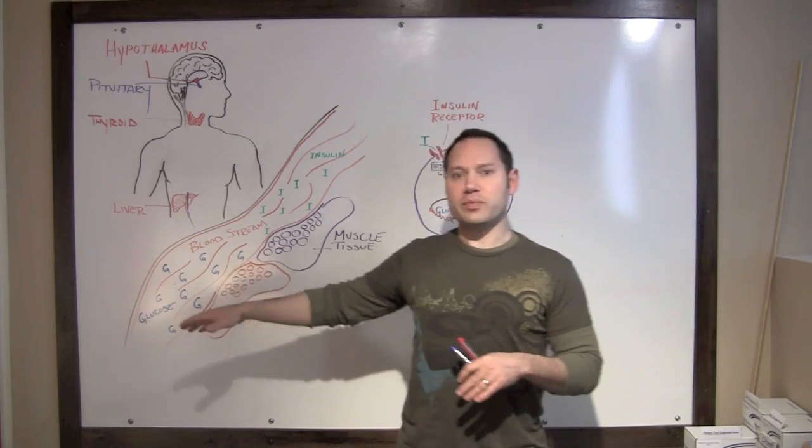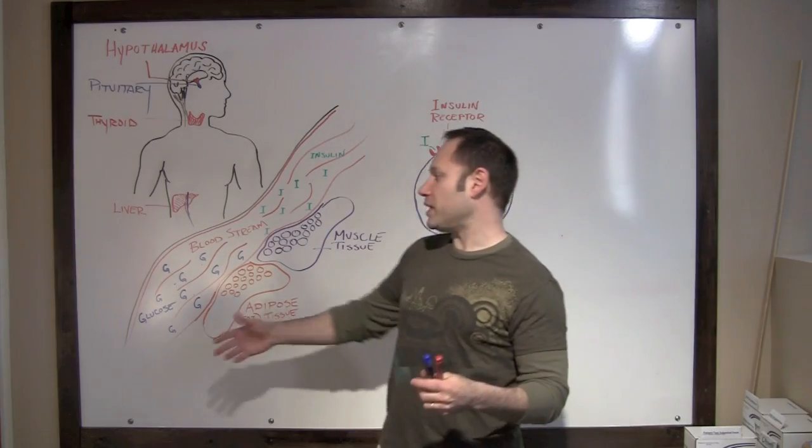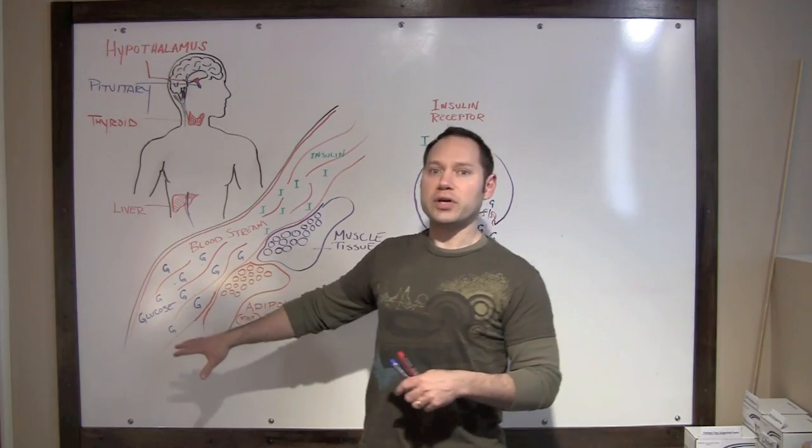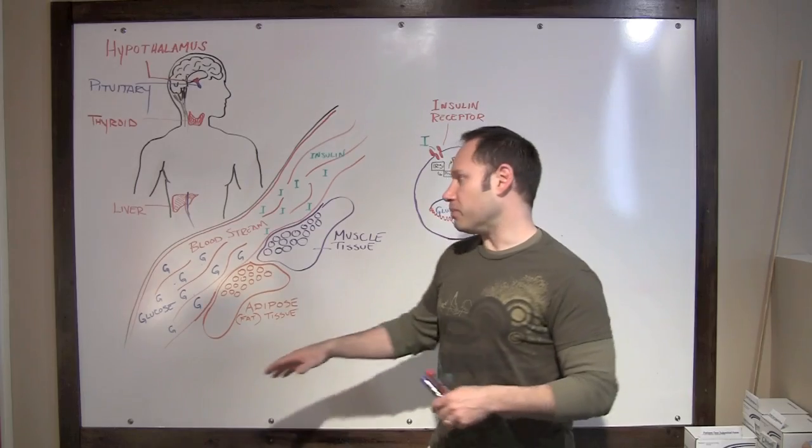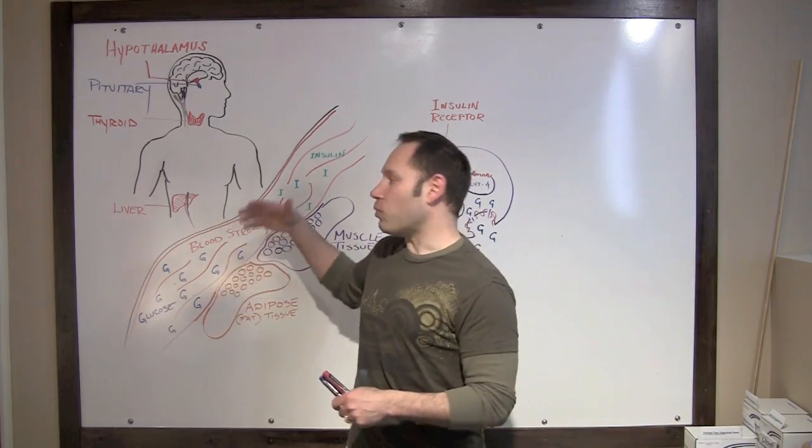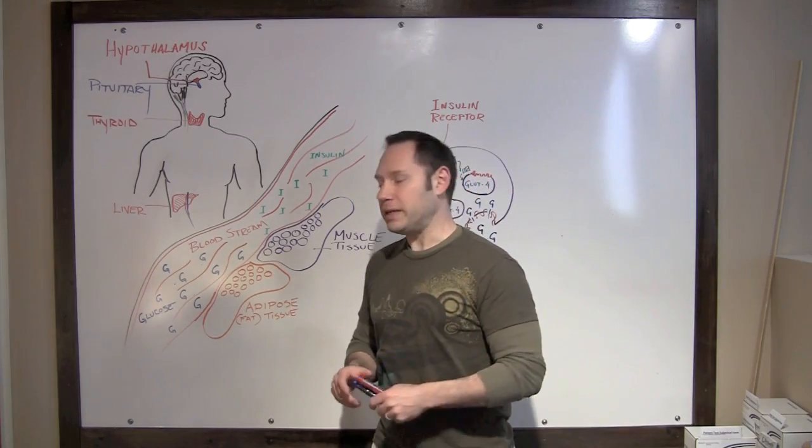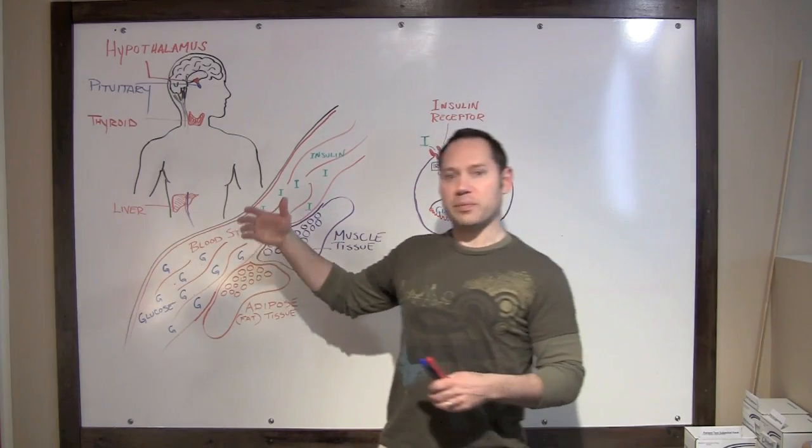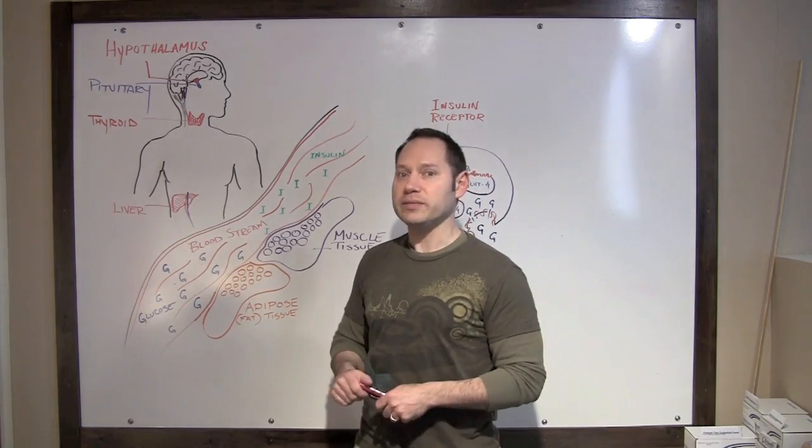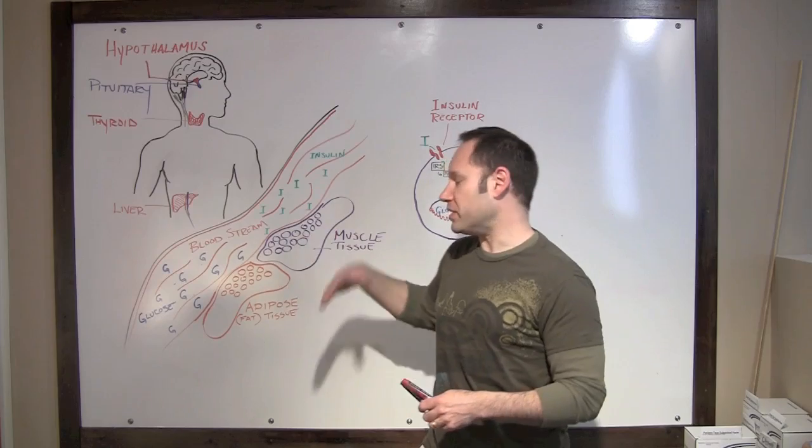You eat something with carbohydrate or protein, and eventually that's going to get broken down into glucose and end up in your bloodstream. When you have glucose in the bloodstream, your body wants to get that into cells where it could be used for energy or ATP. How it does that is the pancreas produces insulin, and insulin is going to help take that glucose out of the blood and put it into cells.